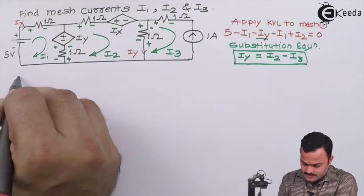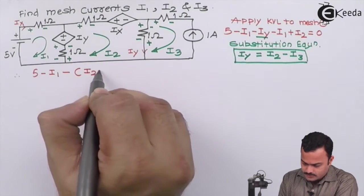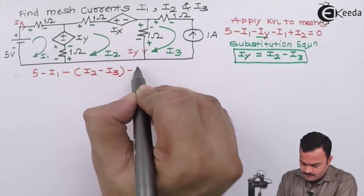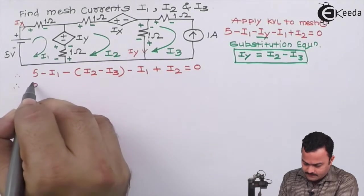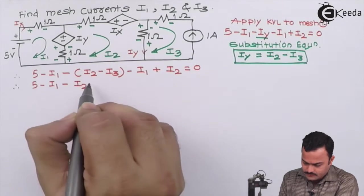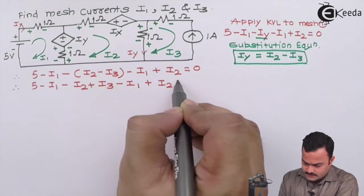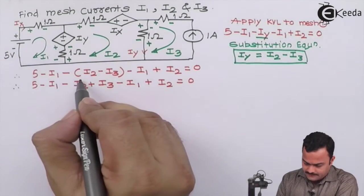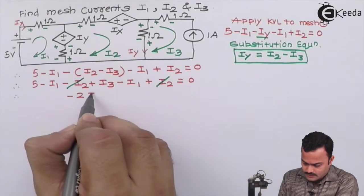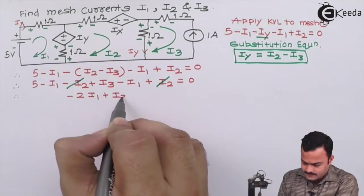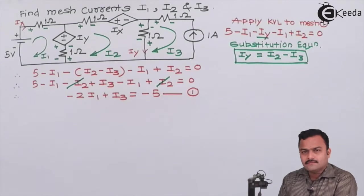Substituting iy = i2 minus i3 into the mesh 1 equation: 5 minus i1 minus (i2 minus i3) minus i1 plus i2 = 0. Simplifying: 5 minus i1 minus i2 plus i3 minus i1 plus i2 = 0. The minus i2 and plus i2 cancel, giving us the final equation 1: minus 2i1 plus i3 = minus 5.